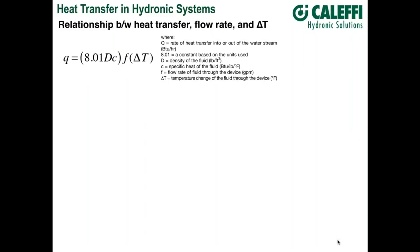Now let's get into something specific for hydronics. This very commonly used equation relates rate of heat transfer to flow rate of a fluid and temperature change in that fluid. The factor 8.01 makes the units consistent. D is the density of the fluid and C is the specific heat — when we change from water to antifreeze, D and C change. These are fluid properties that not only change with the fluid type but also with the temperature of the fluid. We can put measured values of flow rate, temperature change, and fluid type into this formula to calculate the resulting rate of heat transfer.